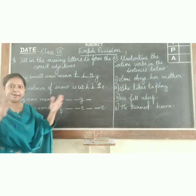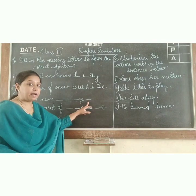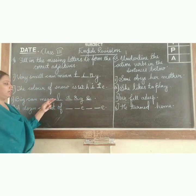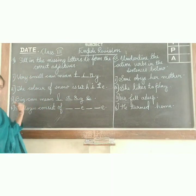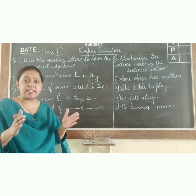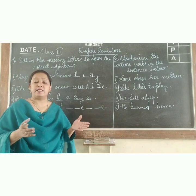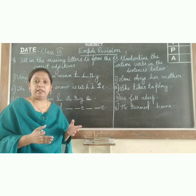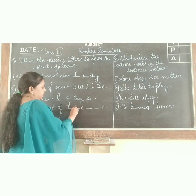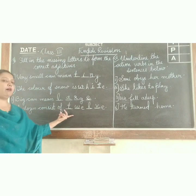Big can mean — L-dash-dash-G-dash. Big can mean large, L-A-R-G-E. A dozen consists of dash — in a dozen, how many quantities? The answer is twelve, D-W-E-L-V-E. A dozen consists of twelve.